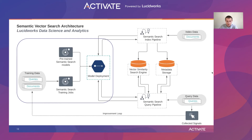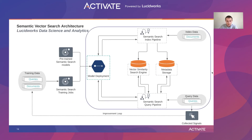Once models are obtained, they are deployed into the cluster for real-time usage. During the data ingestion process, our index pipeline calls the deployed models to encode incoming data into vectors. Those vectors are stored in a vector similarity search engine, whereas the combined data is stored in metadata storage. On query time, the query pipeline interacts with deployed models to encode an incoming query into a vector. The query vector is sent to the vector search engine for fast and efficient similarity search with indexed documents. Finally, data of the most relevant documents is retrieved from metadata storage and sent back to users. Signals of users' interactions with the search results are captured and used in an improvement loop for relevancy fine-tuning.